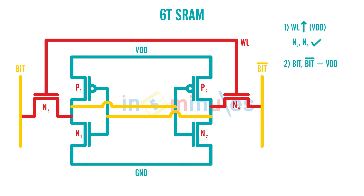When this happened we also saw an analogy, but before that let's quickly name our nodes A and B. Node A stored a zero, which implies node B stored a one, and we wanted to read this zero at A. Because there was a zero at A, P2 was on and so was N1. According to the read stability criteria, W/L of N1 was greater than W/L of N3.